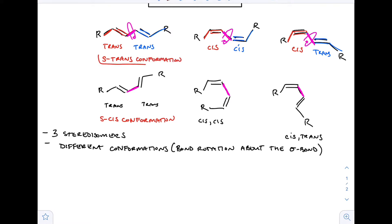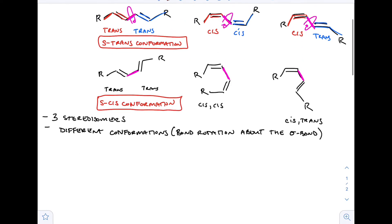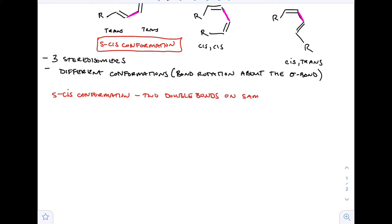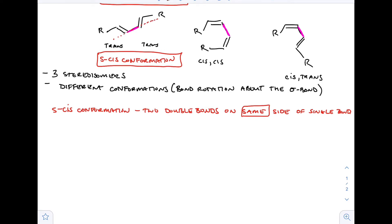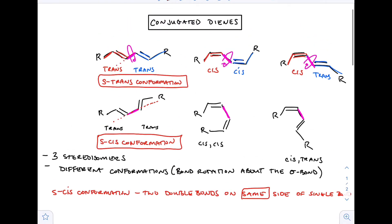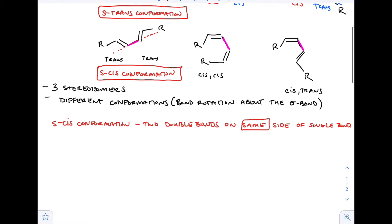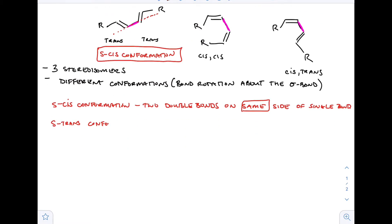Now we have terms associated with these: the S-trans conformation on the top and the S-cis conformation on the bottom. The S-cis conformation is when you have two double bonds on the same side of the single bond. If we drew a plane straight through that pink bond, the double bonds are on the same side. In the above structure they are on opposite sides of that sigma bond, which is why the top one is S-trans. The S-trans conformation is when we have two double bonds on opposite sides of the single bond.